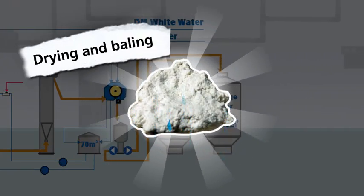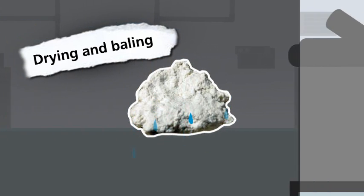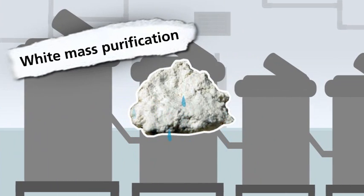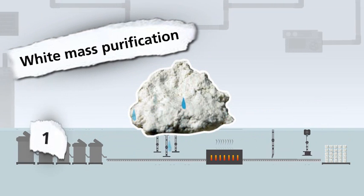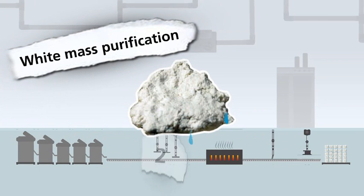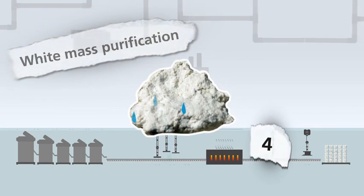Once bleached, the material goes on to the drying and baling stages. The white mass purification procedure is divided into five stages, during which the impurities that come with the fiber are separated from the pulp.